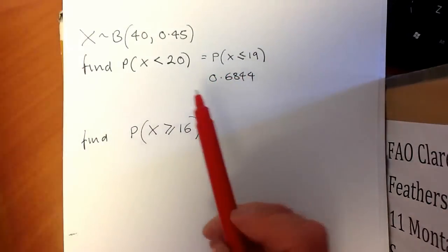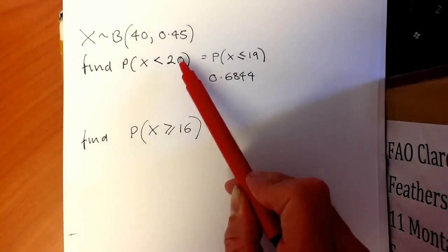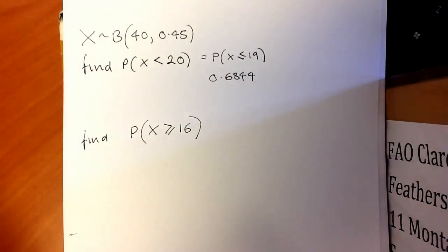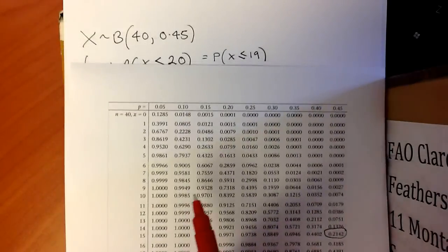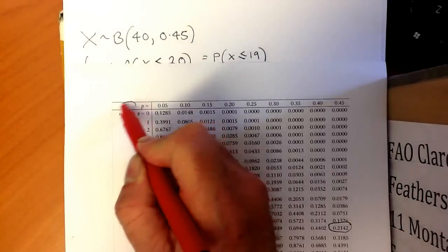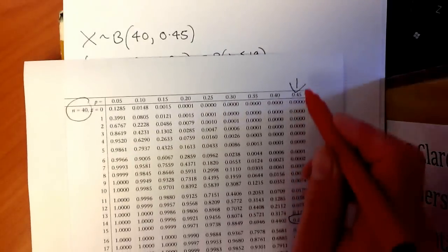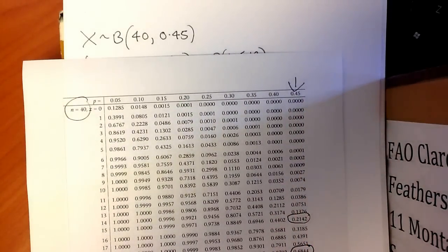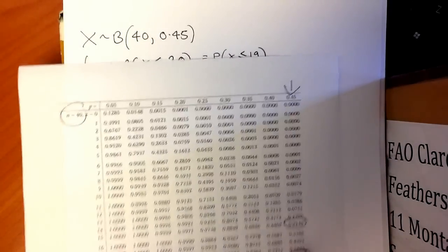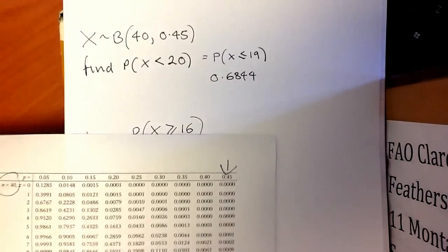A possible error would be to look up 20 against 40 and 0.45. I'll show you again: I've extracted where n is 40, p is 0.45, and I come down to the correct column. It's important that I move down to 19 and not 20, as the tables give less than or equal to values.